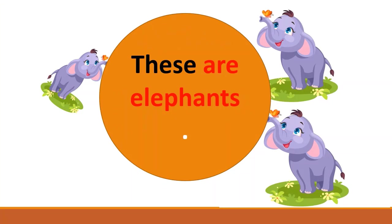See the example: 'These are elephants.' Yeh saare elephants hain jo inke najdeek hain. 'Are' kyun laga? Kyunki ek se adhik elephant hain — because there are more than one elephant. Agar one elephant hota to hum kahte 'This is an elephant.'